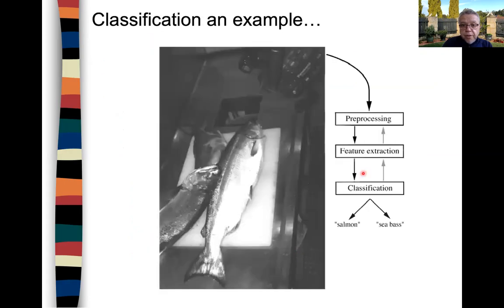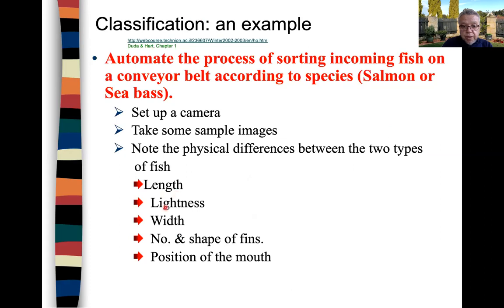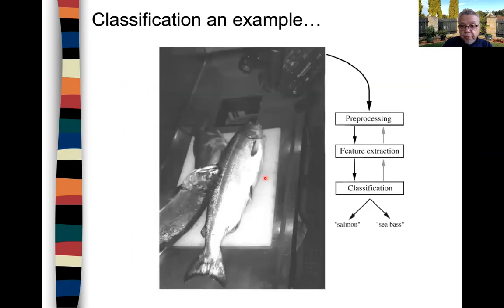This is the image that we get. We pre-process it — clean the image, remove the noise, and so on — then extract some features. As we said, these can be geometrical features like length and width, or brightness and lightness of the pixels. We use these features to perform classification: if this fish is coming on a conveyor belt, the camera tells us whether this is a salmon or a sea bass. In this case, we have only two classes.